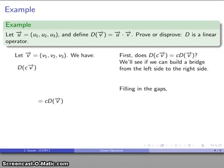Let's fill in the gaps. We have our definition: c times vector v⃗, that's a scalar multiple of this vector, so I know it's going to be (cv₁, cv₂, cv₃). My definition: D applied to any vector is the dot product of that vector with u⃗, so I'll find the dot product of this vector with this vector.